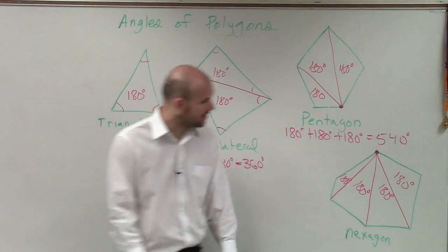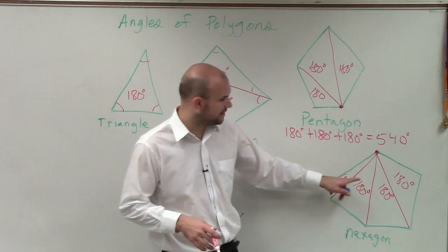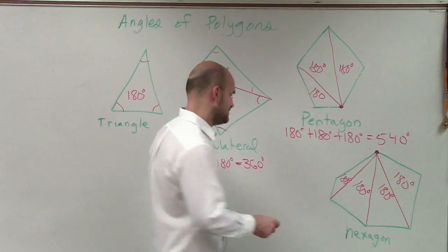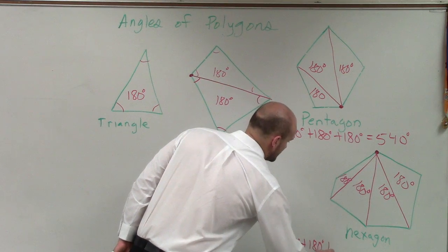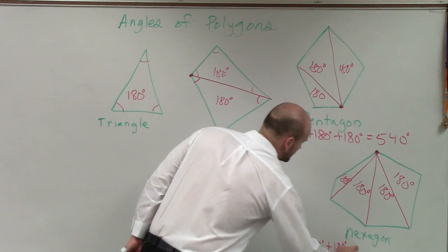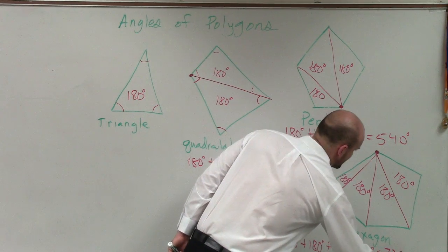Then the last one is our hexagon. Hexagon is going to be 180 plus 180 plus 180 plus 180. So 180 plus 180 plus 180 plus 180 equals 720.